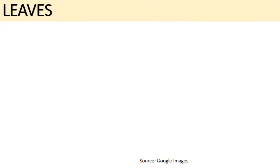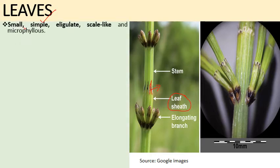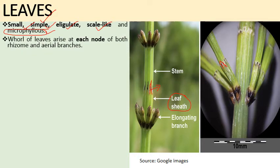Regarding leaves in Equisetum: the leaves are microphyllous, meaning smaller in size. They are fused at some part from the base into the stem, forming a leaf sheath, with a pointed apex. They are without ligule, and their number varies from species to species. The leaves are highly reduced, scale-like, and do not perform photosynthesis. They occur in whorls and arise at each node in both the rhizome and aerial branches. Where they are fused with the stem at the base, they form a leaf sheath around the stem with free pointed tooth-like ends.